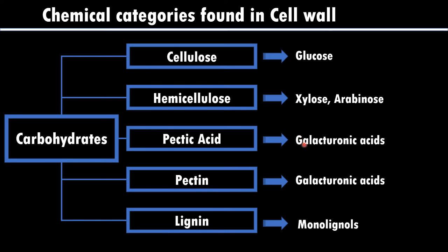The difference between pectic acid and pectin is the units of galacturonic acids. In pectic acid, around 100 units of galacturonic acids are repeating, whereas in pectins it will be up to 200 units of galacturonic acids. In lignins, we can see a special type called monolignols.